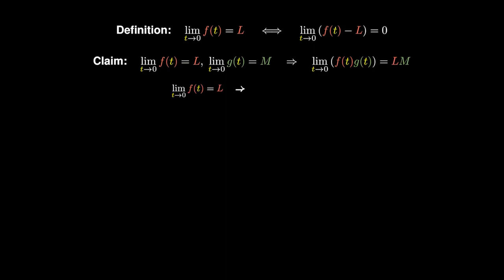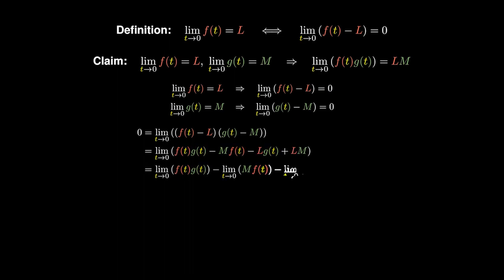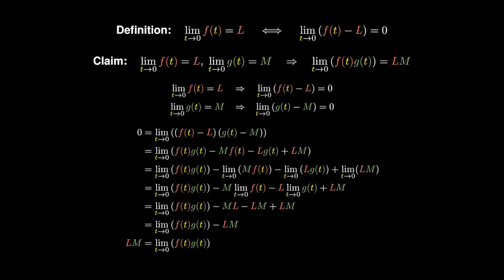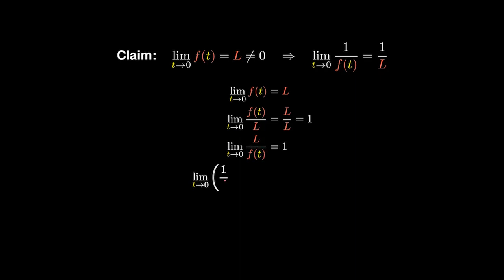For multiplication: since f has limit L, f − L has limit zero, and since g has limit m, g − m has limit zero. Their product (f − L)(g − m) also has limit zero. Expanding and distributing limits, using lim f = L and lim g = m, and bringing Lm to the left side, we conclude lim(fg) = Lm. For division: since f has limit L, dividing by L gives a function with limit 1. Applying the reciprocal result, 1/(f/L) has limit 1, so 1/f has limit 1/L, meaning lim(1/f) = 1/L.